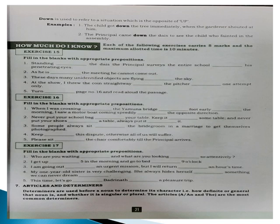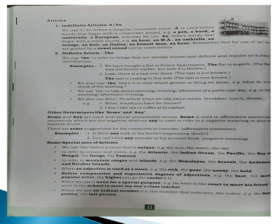Here we have articles and determiners. Determiners are used before a noun to determine its character — how definite or general the noun is, and whether it is singular or plural. The articles 'a' and 'the' are the most common determiners. We will see the details on page number 22. There are indefinite articles — 'a' and 'an' — and the definite article 'the'. We use 'a' with words beginning with a consonant sound, and 'an' with singular words beginning with a vowel sound.